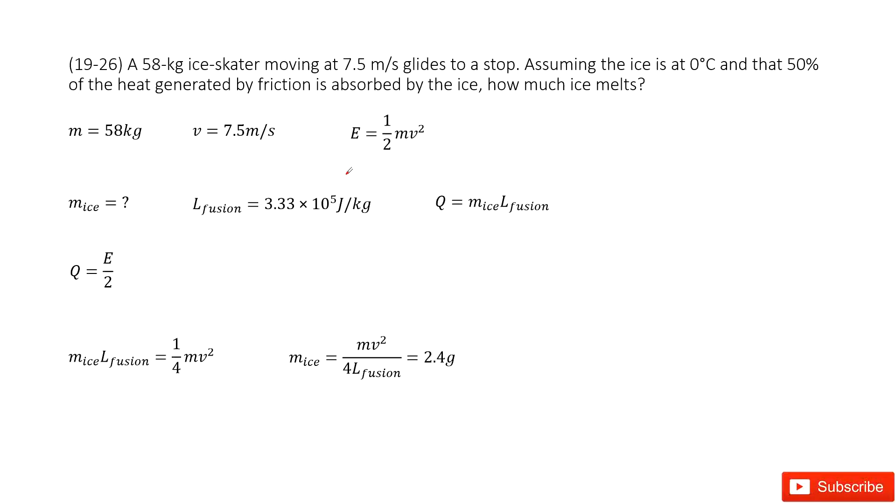Chapter 19 is about the first law of thermodynamics. We have an ice skater with given mass and initial speed that finally stops, so final speed is zero. The ice temperature is initially 0 degrees Celsius, and half of the heat generated by friction is absorbed by the ice. How much ice melts?